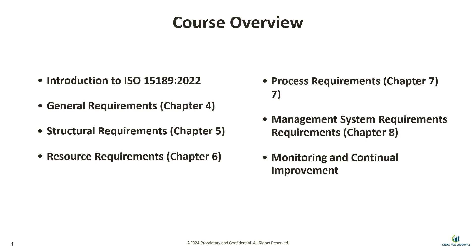Chapter 6: Resource Requirements. Every lab relies on qualified personnel and proper infrastructure. In this chapter, we'll cover staff competencies — what qualifications and training are essential for your team to perform their duties accurately. You'll also learn how to evaluate and maintain the physical resources, such as equipment and facilities, that are critical for producing reliable results. This chapter is all about ensuring that your lab is equipped to deliver quality services consistently.